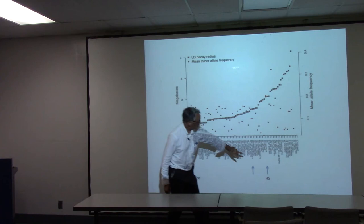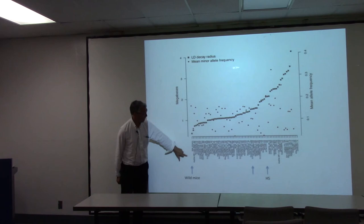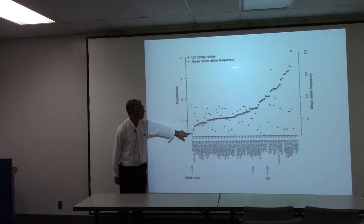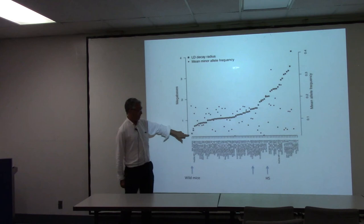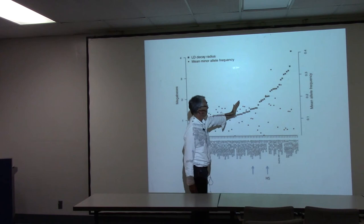We want something a bit higher for heterozygosity. The HS is indicated up here. For the LD decay radius, we want it to be as low as possible. At the far end are wild mice — what you might see in the equivalent of outbred human populations, maybe a little bit worse since these come from Arizona. But they're clearly much better than anything else around here.